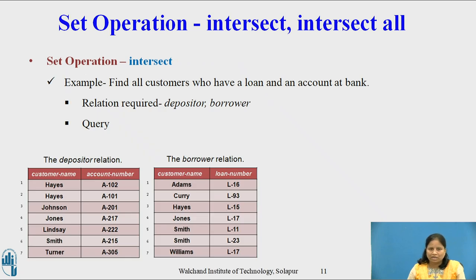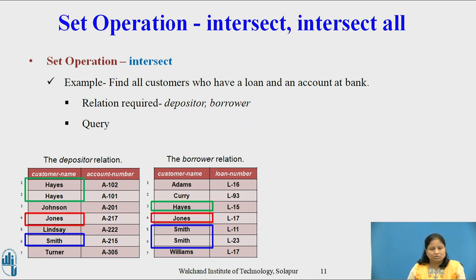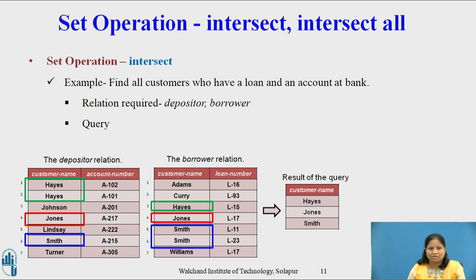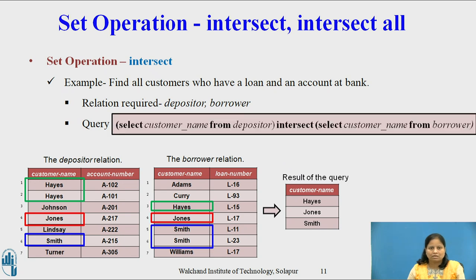Example: Find all customers who have a loan and an account at the bank. We find customer names common in both Depositor and Borrower relations. In both tables, customer names Hayes, Jones and Smith are common. But the Intersect operator produces distinct values, so the result contains three customer names — Hayes, Jones and Smith — even if the Depositor relation contains two tuples for Hayes and the Borrower relation contains two tuples for Smith. The query is: SELECT CUSTOMER_NAME FROM DEPOSITOR INTERSECT SELECT CUSTOMER_NAME FROM BORROWER, and the result contains the distinct tuples from both relations.